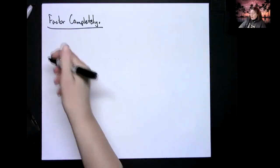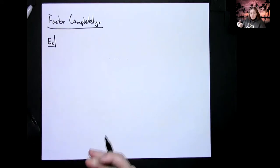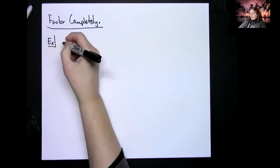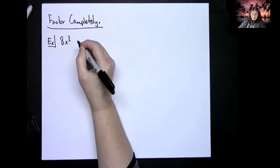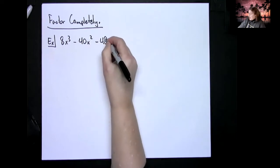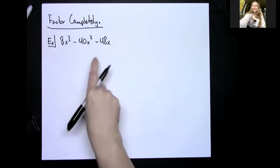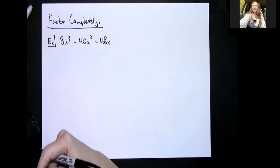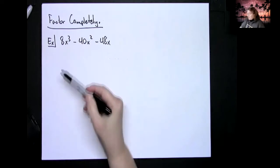Factor completely. That just means there's a possibility that you're going to have to do multiple factoring techniques to get to your final answer. So if I had something like 8x³ - 40x² - 48x, three terms, clearly not a trinomial that we just got done doing because I've got a leading coefficient there with an 8 and this is an x³.